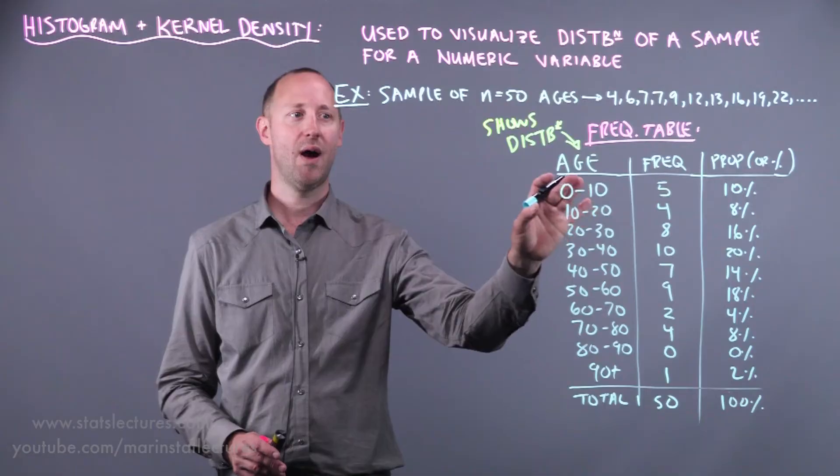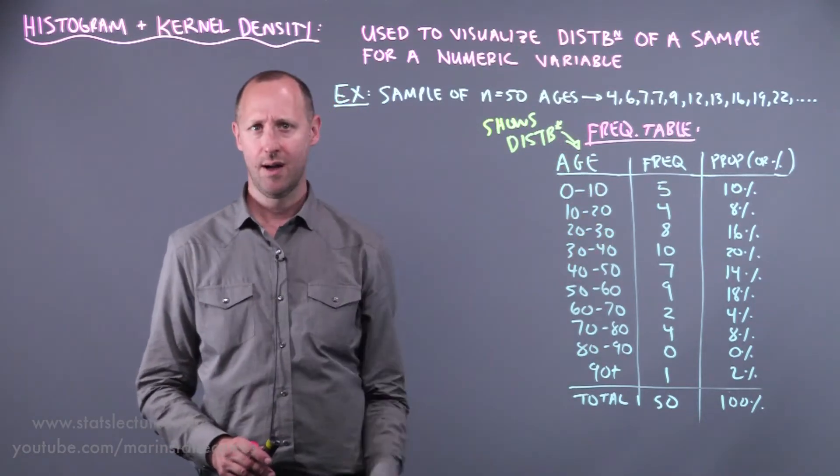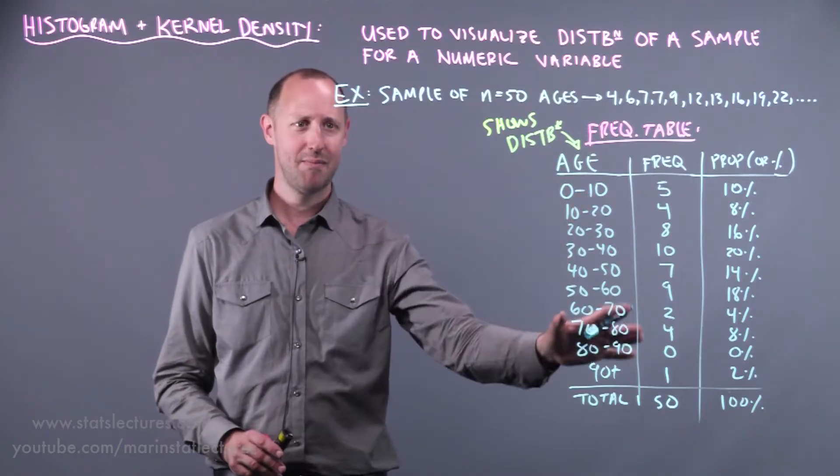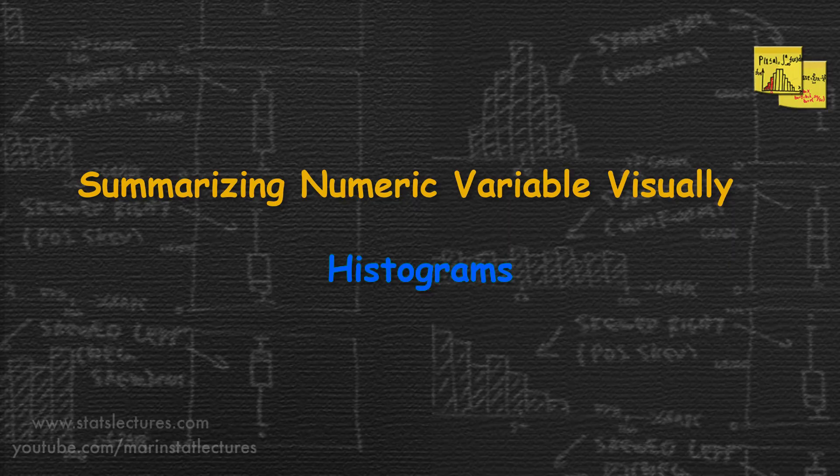So let's talk a bit about how we can make a picture or a plot of this. Again it's a bit, well not complicated but it's a bit messy to look at this. A visual is going to help us out a lot. The visual we can create is called a histogram.